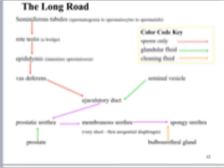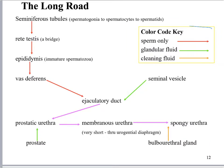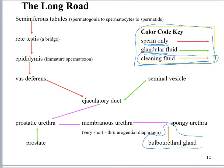I recommend drawing out the pathway that sperm and semen take through the male reproductive tract. Here is my version — you want your own version and you want to memorize this because you will have pathway questions. I've color-coded it to show where you've only got sperm, where you've got glandular fluid, and the bulbourethral gland which is not part of semen. Work on what works for you to memorize the pathway.